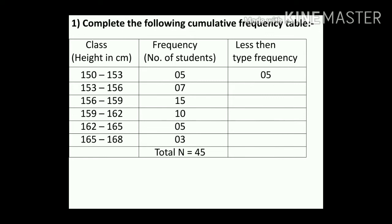In the third column for less-than type cumulative frequency, we keep the first frequency as it is — that is 5. Then for the second row, we add the first and second frequencies: 5 plus 7 equals 12.